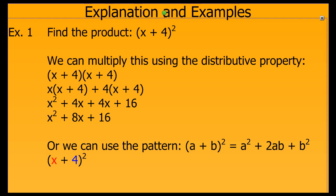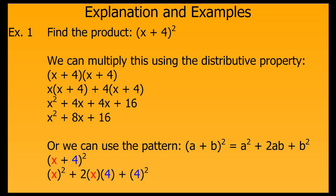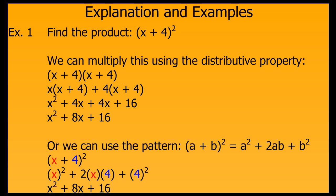x is my first term and 4 is my second. So I square my first term, x, take 2 times my x times my 4, and then square the 4. This gives me the same answer as distributing — x squared plus 8x plus 16 — but just gives it to us a little bit quicker and easier.